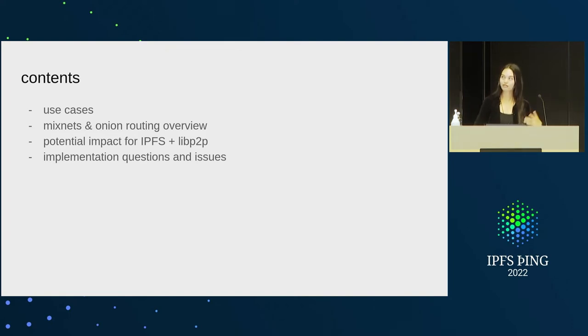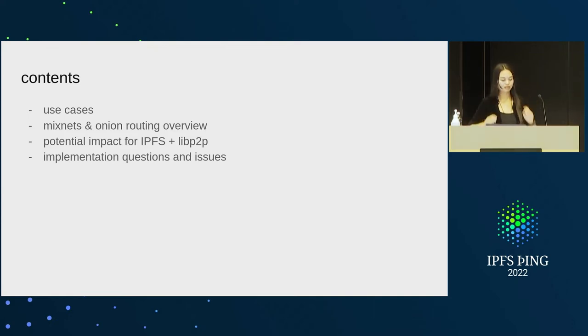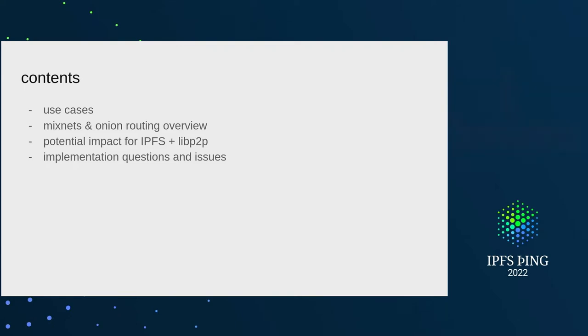I'm going to present use cases, a bit of an overview for Mixnet and onion routing, some of the impact for IPFS and LibP2P, and then some open implementation questions and issues that we would need to solve.